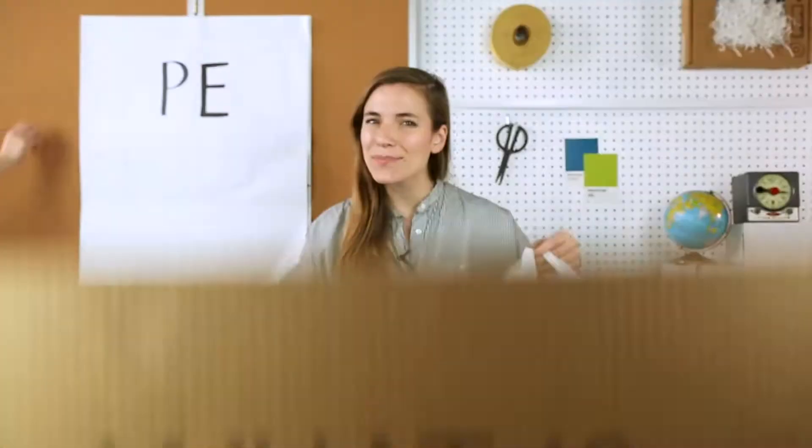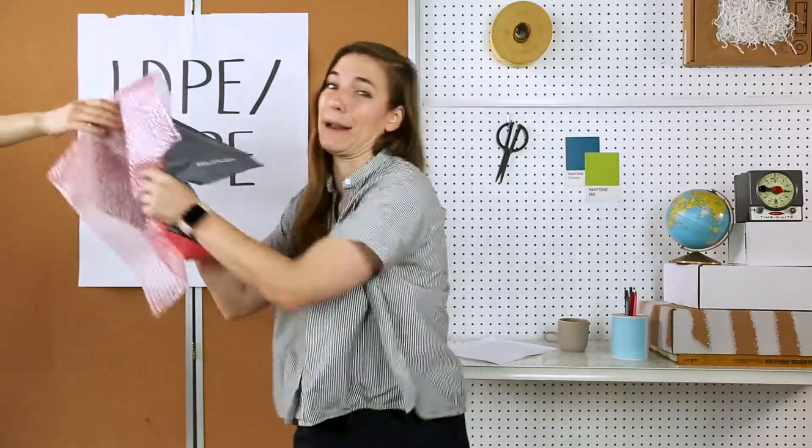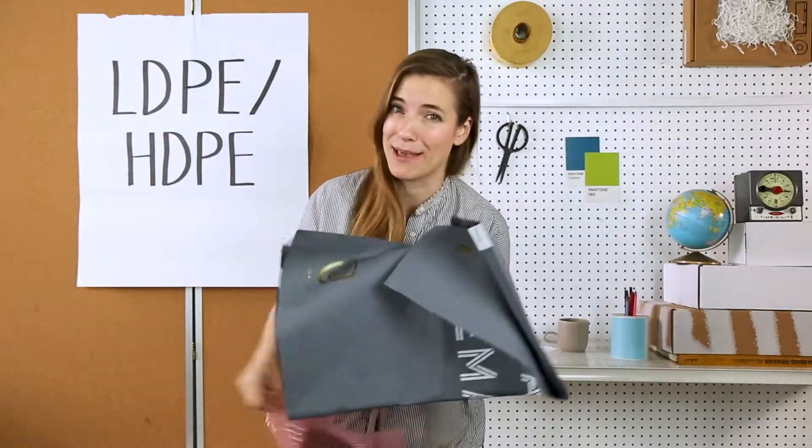What is PE? This is PE, in the form of a plastic bag. PE stands for polyethylene and there's two main types: LDPE and HDPE. LDPE stands for low-density polyethylene. It's a softer, film-like material that can be used to make things like bubble wrap or flexible polymers.